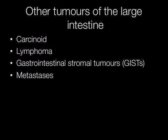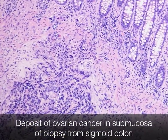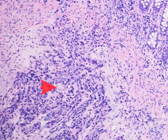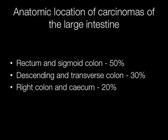Other cancers of the large intestine include carcinoid tumours, lymphoma, gastrointestinal stromal tumours or GISTs, and also metastases. The submucosa of this biopsy from sigmoid colon contains a deposit of ovarian carcinoma. Around 50% of carcinomas of the large intestine are present in the rectum and sigmoid colon, 30% in the descending and transverse colon, and 20% in the right colon and cecum. A significant proportion of tumours can therefore be seen with the sigmoidoscope, and a smaller proportion detected digitally.